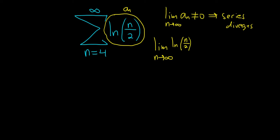well, when n approaches infinity, n over 2 also gets really big. And so the natural log of something getting big is really big.